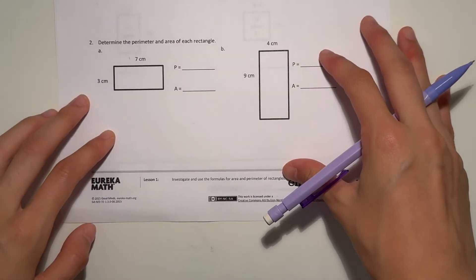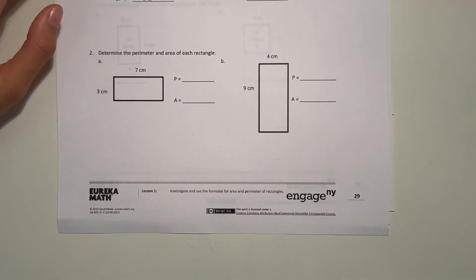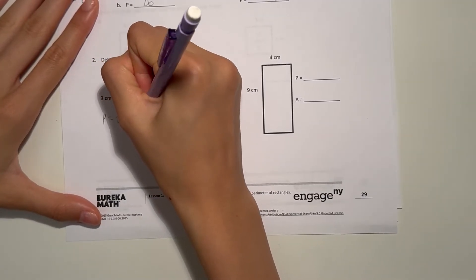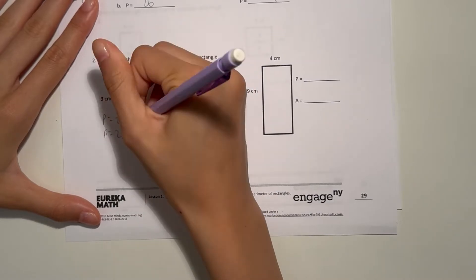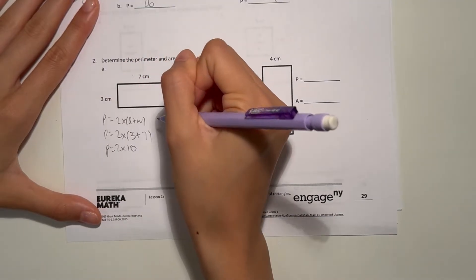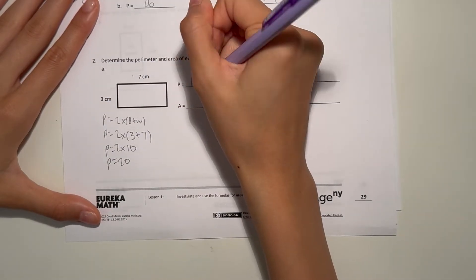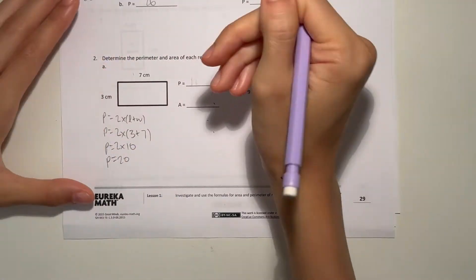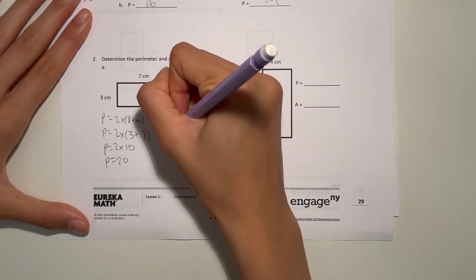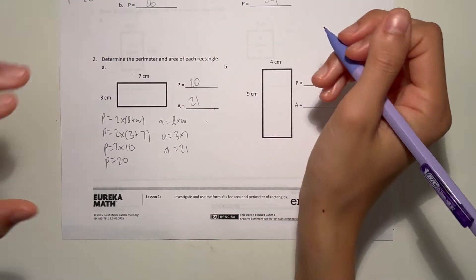Number 2 says: determine the perimeter and area of each rectangle — they've given us the measurements. So for A, perimeter equals 2 times length plus width: 2 times 3 plus 7, which is 2 times 10, because 3 plus 7 is 10. So our perimeter is 20. Now our area: area equals length times width, so area equals 3 times 7. Area equals 21.